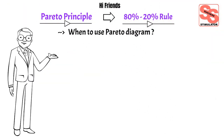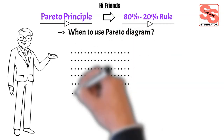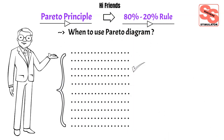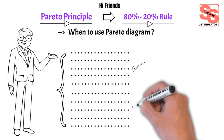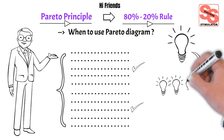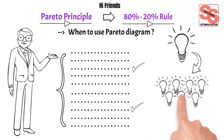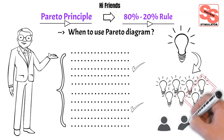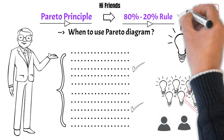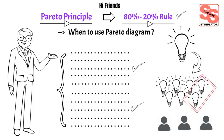When to use a Pareto diagram? By now you can likely answer this question. Use it when you have a list of problems and want to understand which problem is significant and needs to be prioritized, to break big problems into smaller problems, to prioritize high-impact issues, and to allow better use of limited resources. These are the areas where a Pareto diagram helps us.